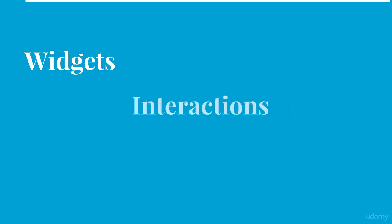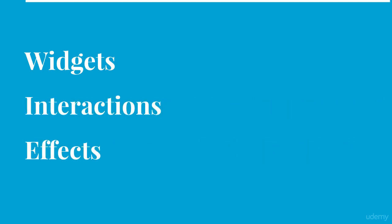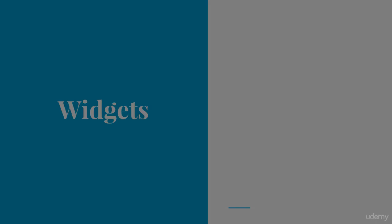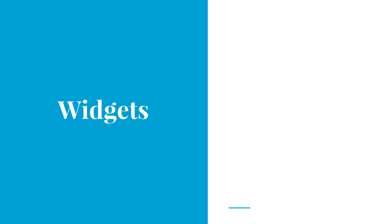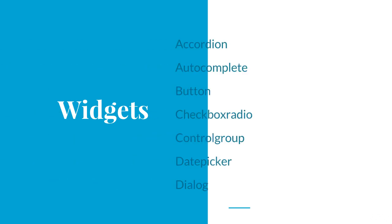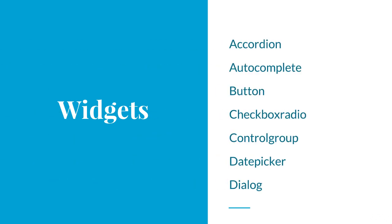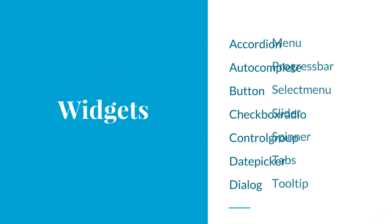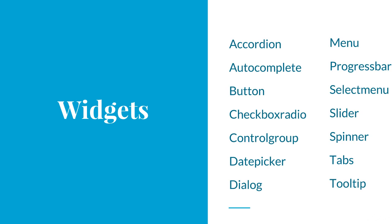jQuery UI provides us with widgets, interactions, effects, and utilities. Widgets are feature-rich controls that you can use to create user interface elements. There are a number of widgets offered by jQuery UI: accordion, autocomplete, button, checkbox radio, control group, date picker, dialog, menu, progress bar, select menu, slider, spinner, tabs, and tooltip. In this course, you will see discussions about all these different widgets.